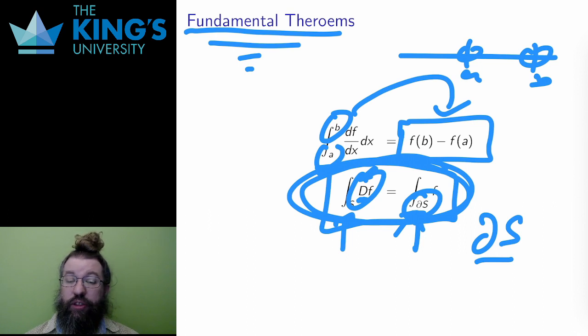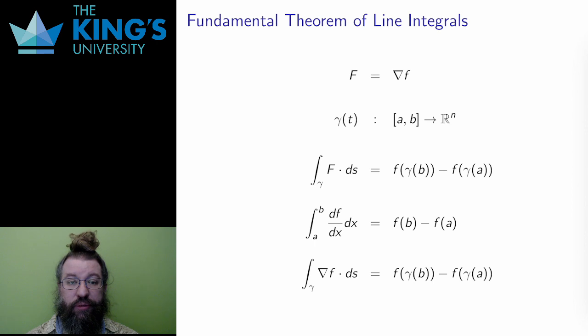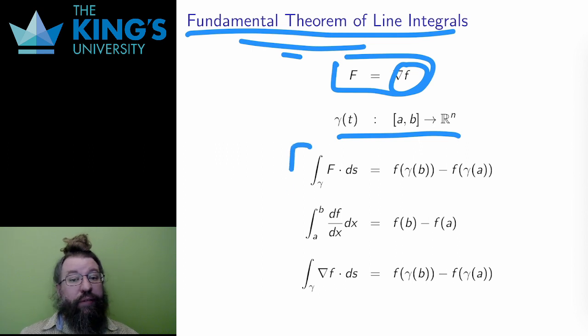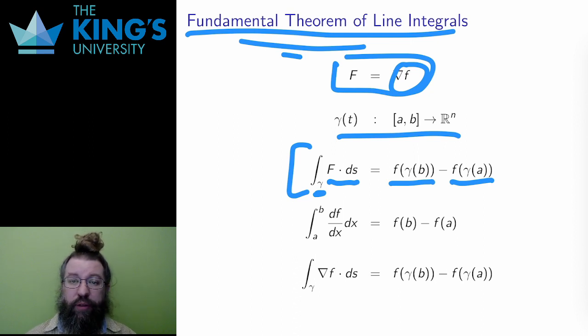And I can start answering this question already with line integrals. The first new fundamental theorem is about line integrals. So, let F be a conservative vector field so that lowercase f is its potential. Let gamma be a curve in the domain of F. The fundamental theorem says this: The integral of a conservative vector field is equal to the potential evaluated at the end of the curve minus the potential evaluated at the start of the curve.